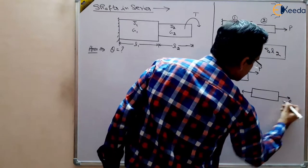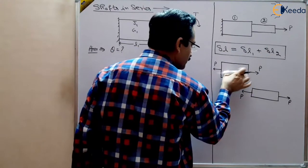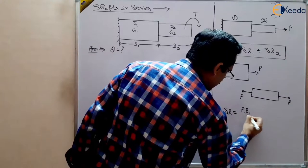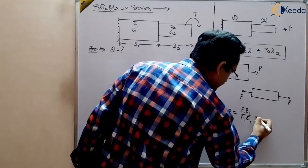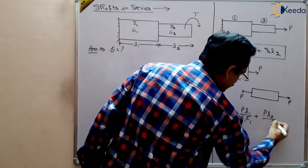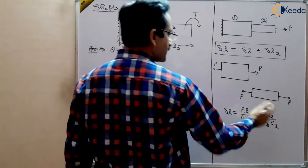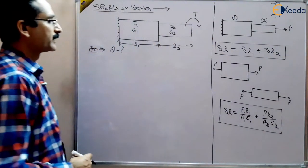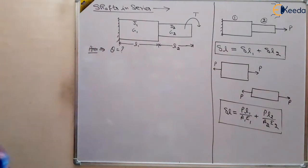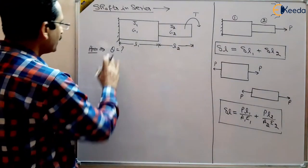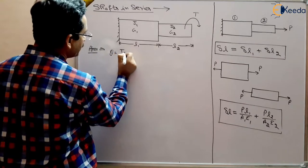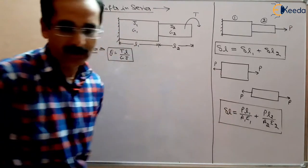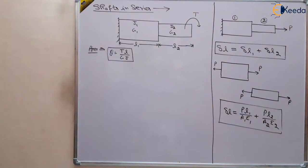You find the total extension due to each part. So total extension equals PL/AE of the first shaft plus PL/AE of the second shaft. That was the total elongation of the entire bar. Similarly, we have the formula that the angle of twist is given by TL/GJ. Remember this basic formula: TL/GJ is analogous to PL/AE.